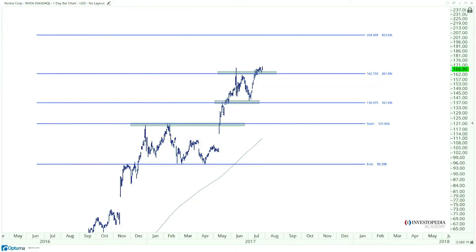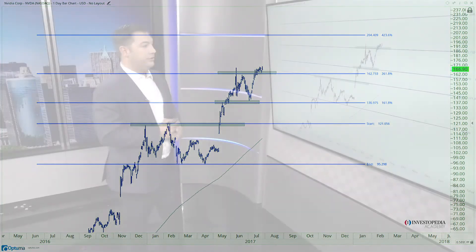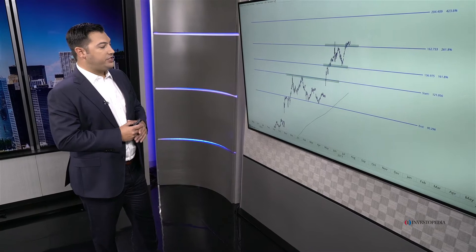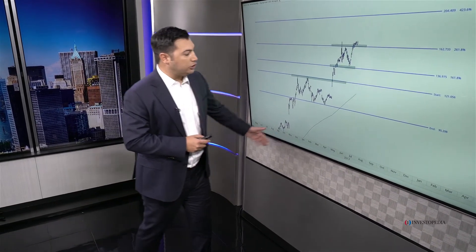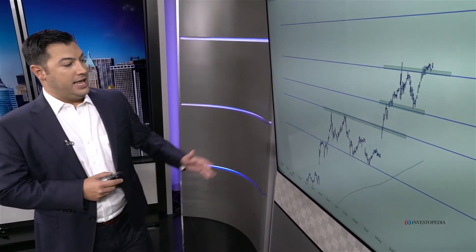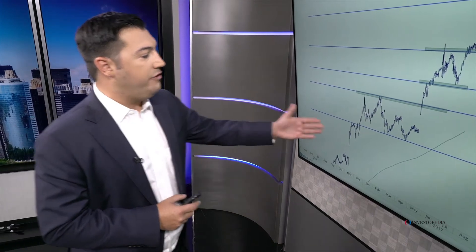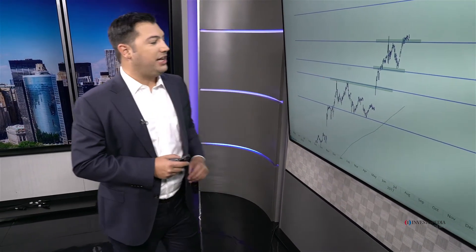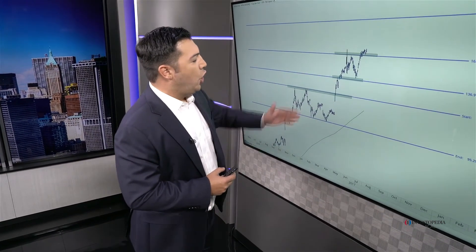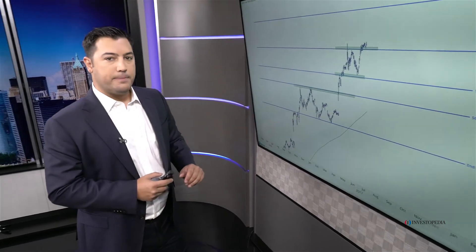We use it the exact same way we use the 161.8 and the 261.8 — this gives us the next target. Here we're looking at shares of NVIDIA in 2017: higher lows, higher highs, upward-sloping 200-day moving average — clearly in an uptrend. We have a nice consolidation from the end of 2016 through the spring of 2017 until we finally break out above resistance — six months of sideways action. Our initial target is right around $137, which is 161.8% of that entire six-month consolidation. Once we reach that level, the market respects it, corrects, but immediately exceeds it.